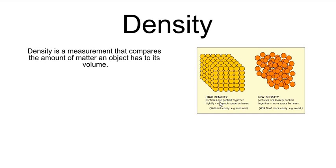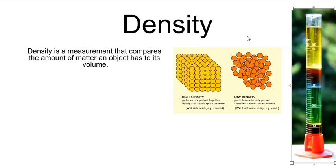Like in this diagram shown here, things with high density are tightly packed and not much space between, like an iron nail. Low density is loosely packed in a specific space, or in the same space as the high density thing, but there's less matter in it.